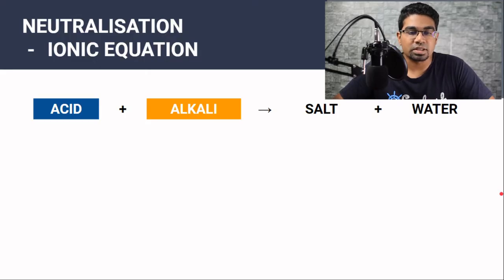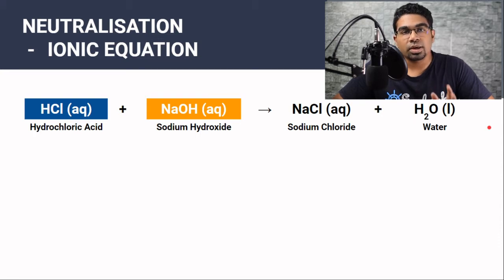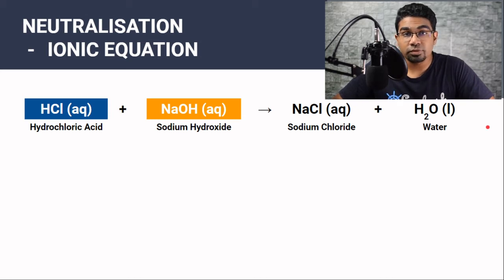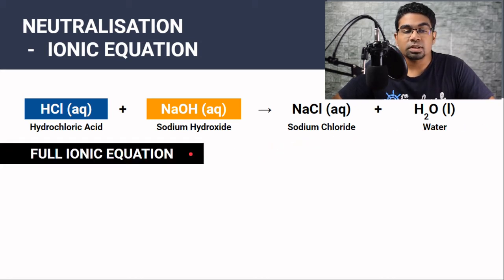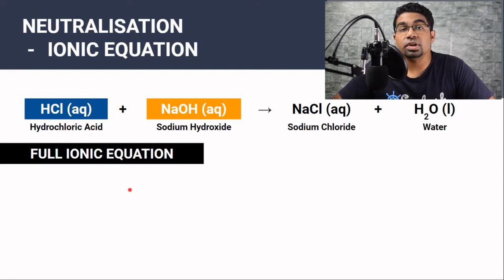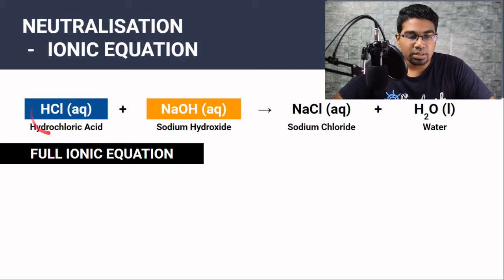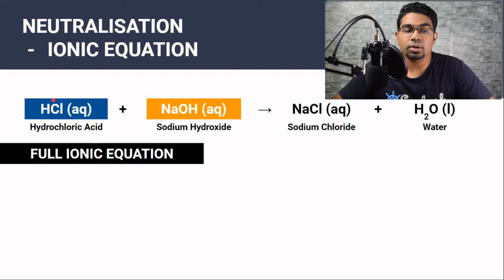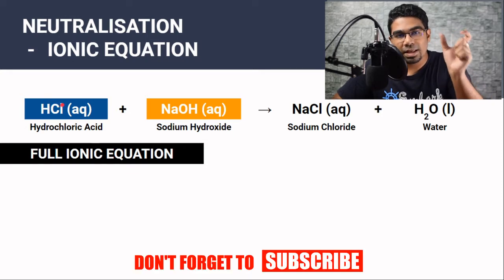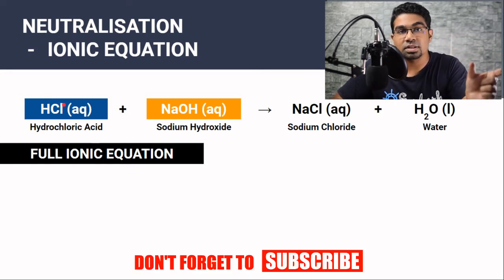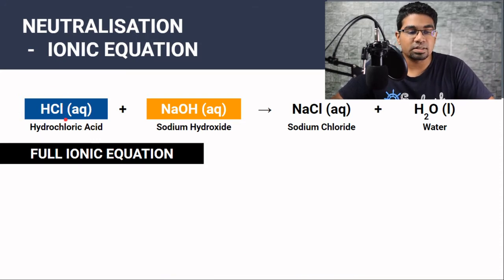Let's look at the ionic equation of neutralization. An ionic equation shows the ions that are involved in the reaction. We have two types: we start with the full ionic equation. The full ionic equation is written with the ions in aqueous solution written separately as free ions. For example, hydrochloric acid in aqueous solution is dissolved in water, and the cation and anion exist separately — they dissociate and exist as free ions. So HCl will exist as H⁺ ions and Cl⁻ ions.